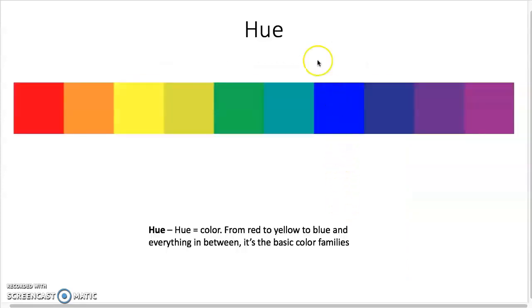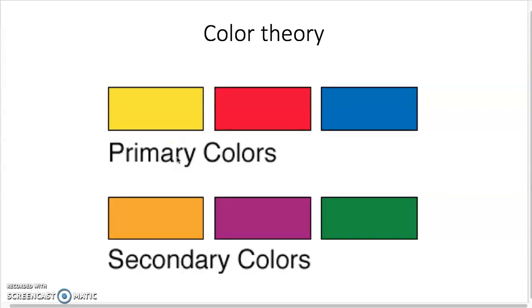Just some terms. Hue is the color from a hue, like a family, a basic hue of blue or red or orange. So I just want you to understand if I say hue, that's what we're talking about.